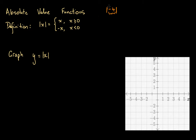By absolute value, what this means is the non-negative value — in other words the magnitude of whatever this number is, regardless of its sign. So the non-negative value of negative 4 is 4. We'd write: the absolute value of negative 4 is 4.